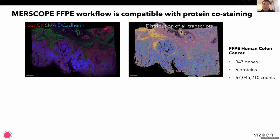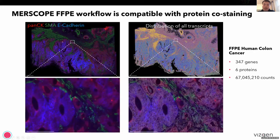This chemistry is also compatible with protein co-staining. Shown here is FFPE human colon cancer with 343 genes and six protein co-stains, with around 67 million transcripts detected across the tissue. On the left is the distribution of three selected proteins — PanCK, SMA, and E-cadherin — and on the right is the distribution of all transcripts overlaid on top of the protein imaging. The protein co-staining integrates very nicely with the RNA imaging.